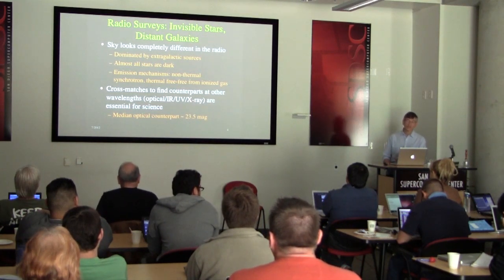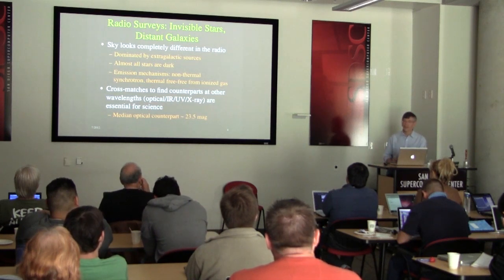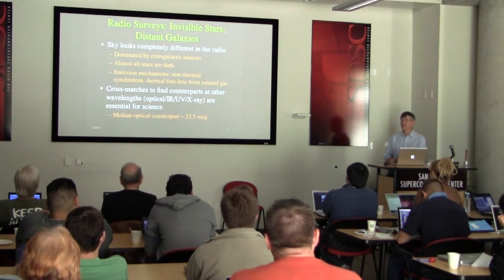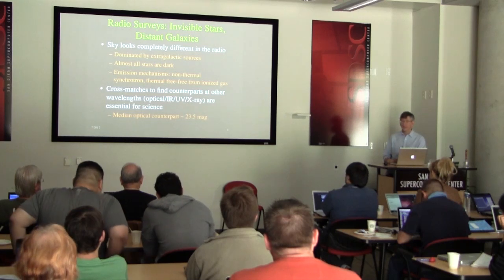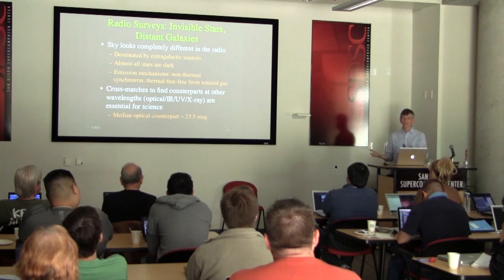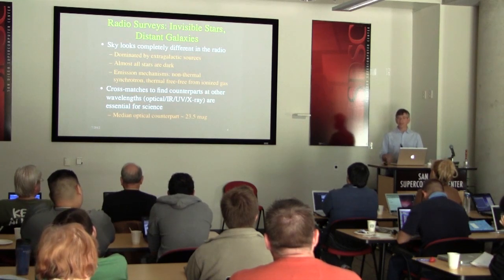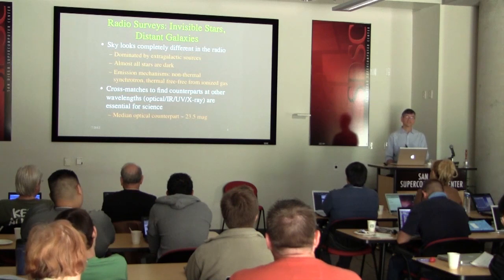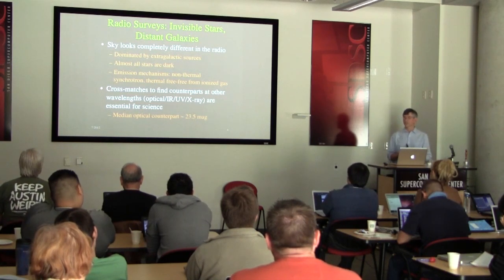In the southern hemisphere you can see the Magellanic clouds. But when you look in the radio, it's completely the opposite — almost all bright radio objects are completely outside our galaxy, and many are at cosmologically significant distances. The radio sky is dominated by extragalactic radio sources.